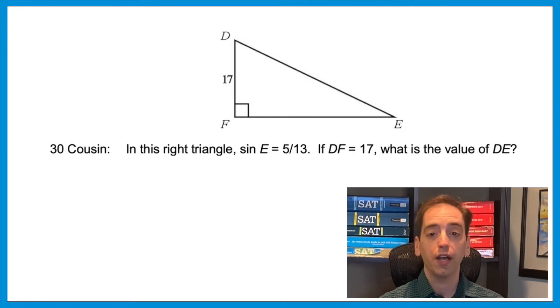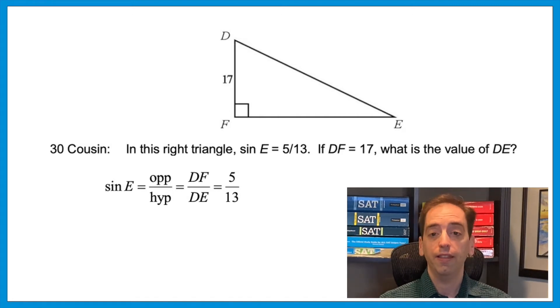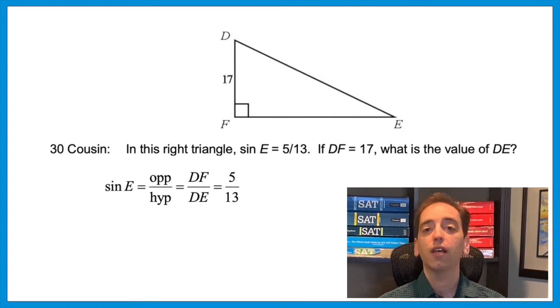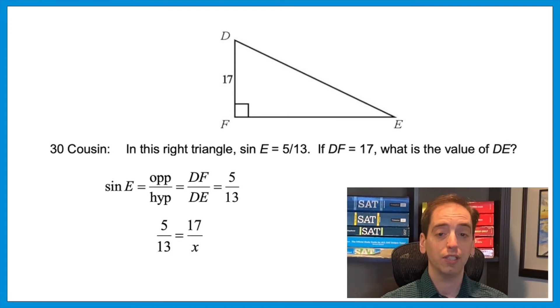Let's start with the fact that the sine of E is 5 over 13. Remember SOH-CAH-TOA: the sine of an angle is its opposite over its hypotenuse. So the sine of E would be side DF over side DE, and that ratio is 5 to 13. But wait — DF is 17, not 5. That's because the sine ratio is just a ratio; it doesn't indicate the actual side lengths. DF to DE being 5 over 13 just means they fall into that ratio. So we set up a proportion: 5 over 13 equals 17 over x, then cross-multiply — x is 44.2. When they tell you the sine, cosine, or tangent is a ratio, you need to set up a proportion. You'll see that on question 30.